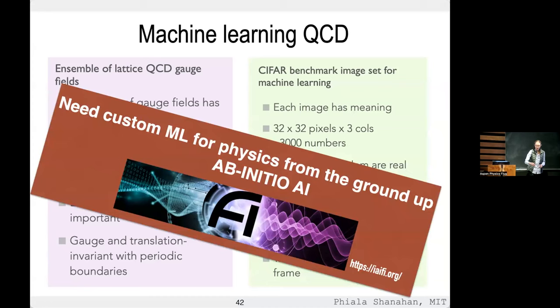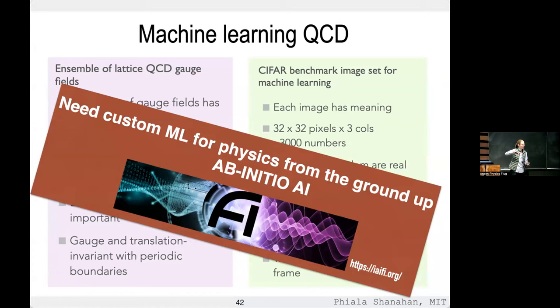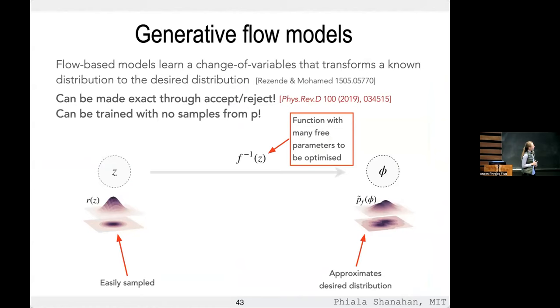This is the focus of the new NSF AI Institute for Artificial Intelligence and Fundamental Interactions — what we're calling ab initio AI: putting the physics in from the ground up and designing machine learning algorithms for physics problems, rather than trying to shoehorn physics into existing ML algorithms.